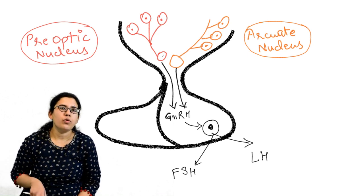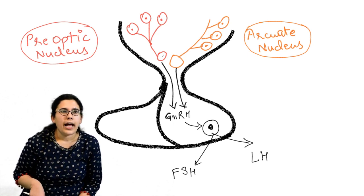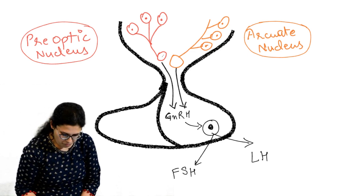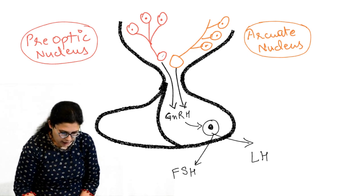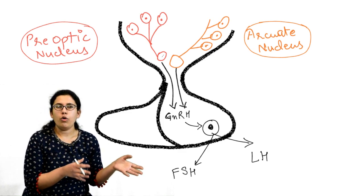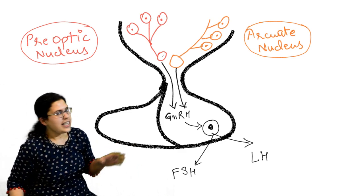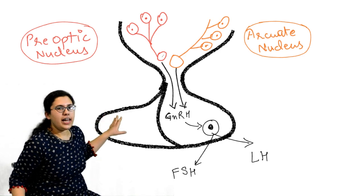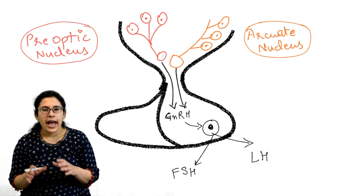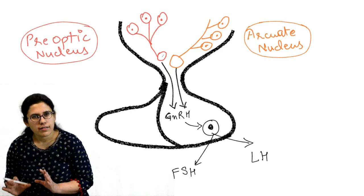There are two types of gonadotropins: follicle stimulating hormone (FSH) and luteinizing hormone (LH). These FSH and LH then act over the ovary, and from there they initiate what we call the ovarian cycle.